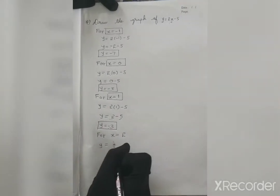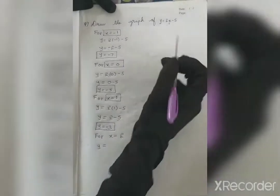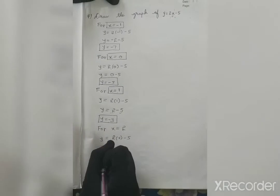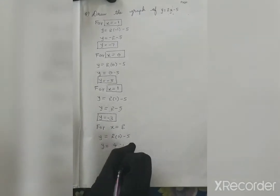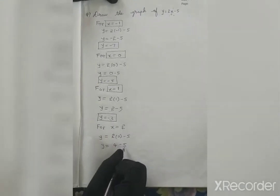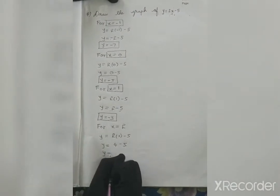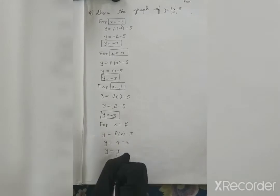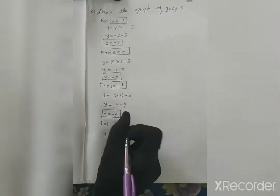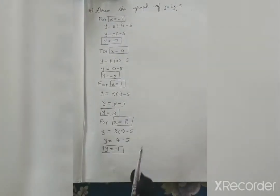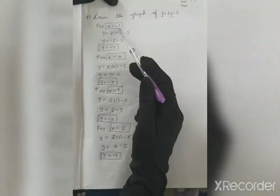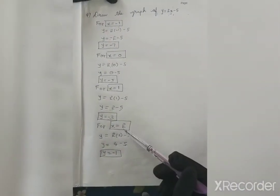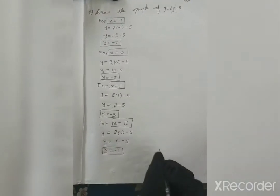I will take one more point for x is equal to 2. Substituting x is equal to 2 in this equation: y is equal to 2 into 2 minus 5, so y is equal to 4 minus 5. I need to subtract because minus 5 and plus 4 means subtract, so y is minus 1. When x is 2, y is minus 1. Now I got 4 points: x equal to minus 1, 0, 1, and 2.